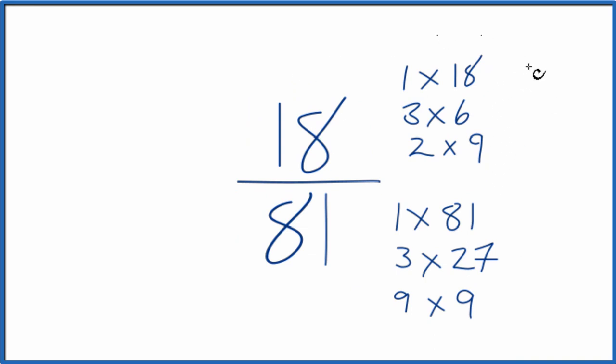So for 18 and 81, when we look at these factors, we're looking for the greatest common factor. And it looks like 9, that's going to be the greatest common factor. It goes into 18 and 81.